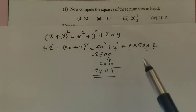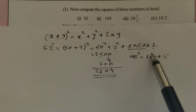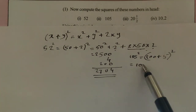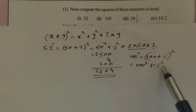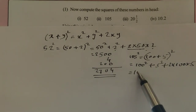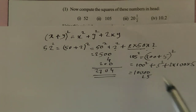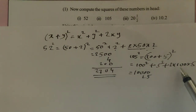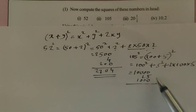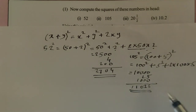Using this identity, next we find 105 squared. 105 square is 100 plus 5 the whole square. Using the identity: first square is 100 square, plus second square is 5 square, plus 2 times of 100 into 5. 100 square is 10000, 5 square is 25, and 2 into 100 into 5 is 1000. The sum gives 11025. So 11025 is the square of 105.